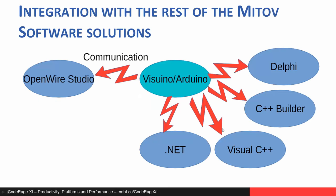Here is how Visuino integrates with the rest of the Mitov Software solutions. You can use Visuino to program Arduino with serial or socket communication to send and receive packetized or non-packetized data. In Delphi, C++ Builder, Visual C++, and .NET, you can use Communication Lab from Mitov Software to receive the data from Arduino and send other data back. OpenWire Studio has the same communication capabilities and can integrate with Arduino the same way.